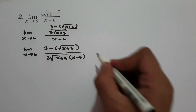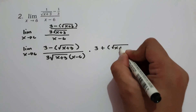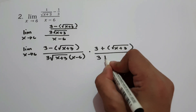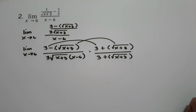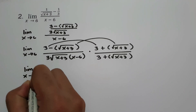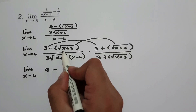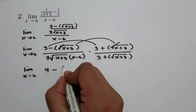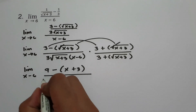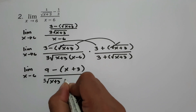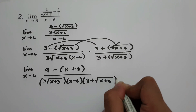Then let us multiply this by the conjugate of 3 minus the quantity of square root of x plus 3, which is 3 plus the quantity of square root of x plus 3, writing it on the denominator as well. Let us multiply the first term by the first term and last term by the last term. We have limit as x approaches 6: 3 times 3 is 9, negative times positive is negative, and multiplying square root of x plus 3 by itself cancels the radical sign, giving x plus 3. The denominator is 3 square root of x plus 3 multiplied by x minus 6 times 3 plus square root of x plus 3.